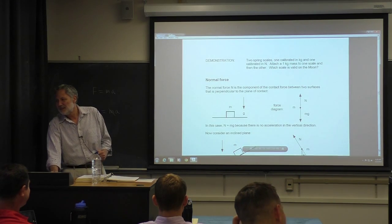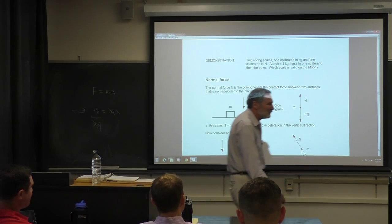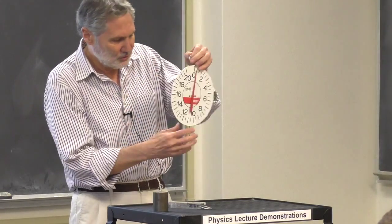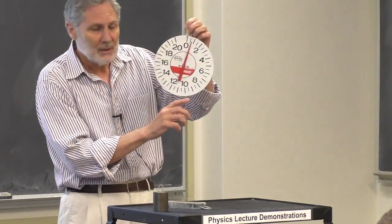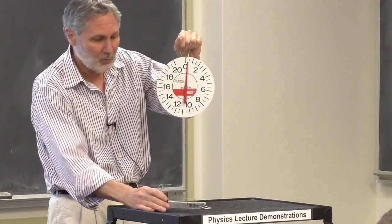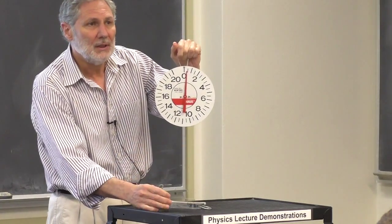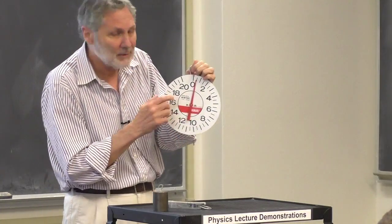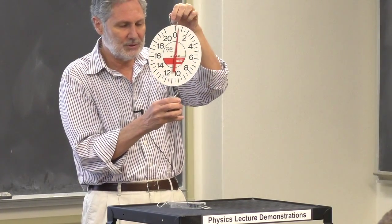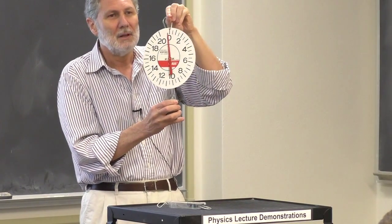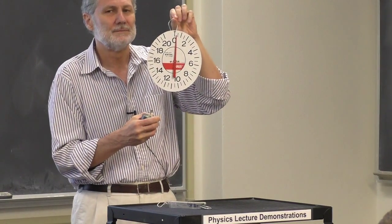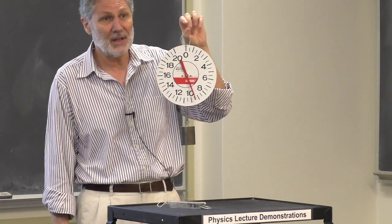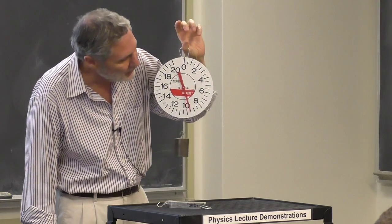Here's a simple demo using a spring scale. There's some kind of torsional spring inside; when you apply a weight — like putting a kilogram on here — it tells you what that force or weight is. It's calibrated in Newtons. So if this is a kilogram, what should it read? W = mg = 1 kg × 9.8 m/s² = about 9.8 Newtons.